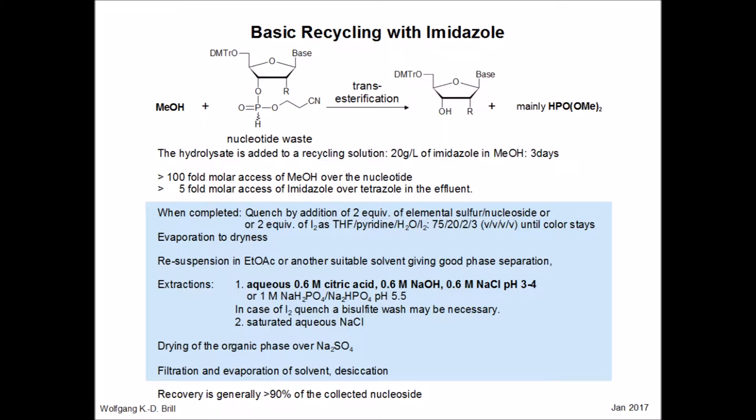Prior to aqueous workup, the reaction has to be quenched. In this case, the hydrogen phosphonates are converted into phosphodiesters. This prevents back reaction during evaporation and workup. Aqueous workup can then proceed, and the nucleoside can be obtained after precipitation without any column chromatography in pure form.